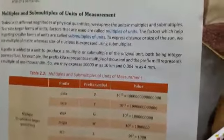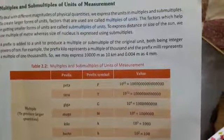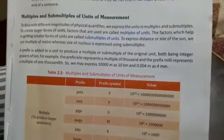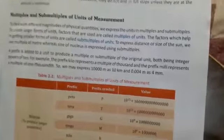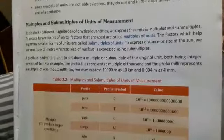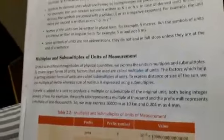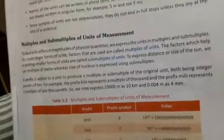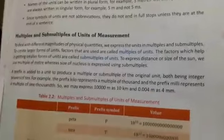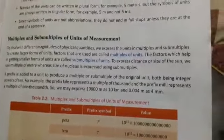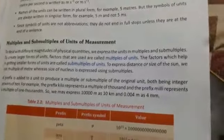Next we will see multiples and sub-multiples of units of measurement. To deal with the different magnitudes of physical quantities, we express the unit in multiples and sub-multiples. To create larger form of unit, factors that are used are called multiples of units. These are larger numbers, the factor bigger than the standard unit. The factors which help in getting a smaller form of unit are called sub-multiples of unit. To express the distance or size of the sun, we use multiples of meters, whereas size of molecules or nucleus is expressed using sub-multiples.